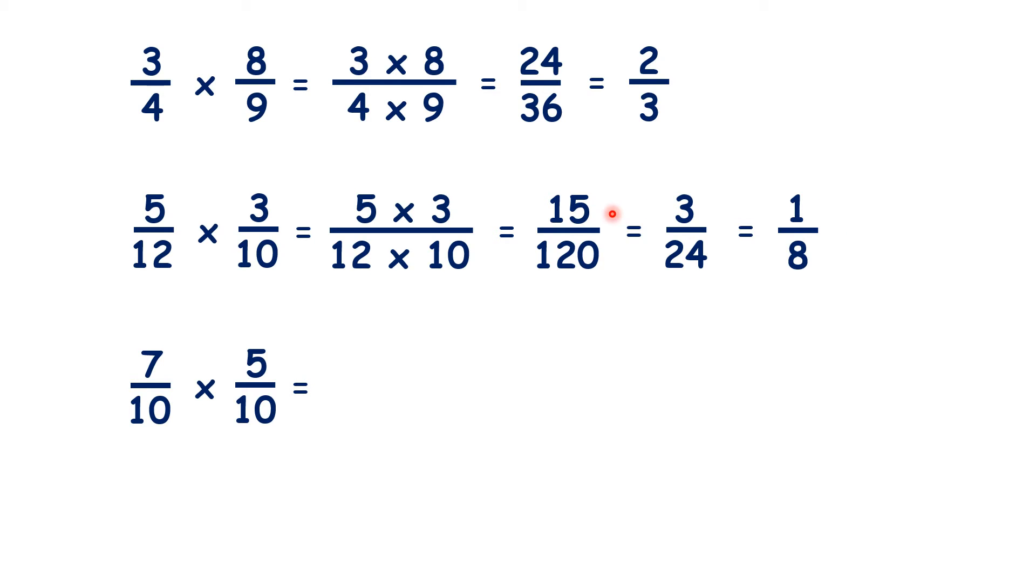Here, we could have divided 15 and 120 by 15 to get 1 eighth straight away, but because we divided the numerator and denominator by 5 first, we then had to divide the numerator and denominator by 3.